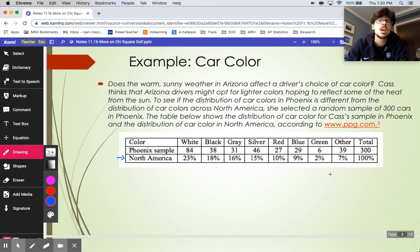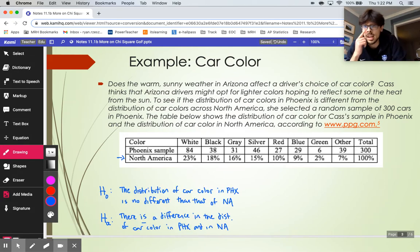So it's four-step time. The first thing we would want to do is set up hypotheses on this problem. H0 is going to basically say the distribution of car color in North America is the same as in Phoenix. So there is no difference between Phoenix and the rest of North America. HA is going to say there is a difference in the distribution of car color between Phoenix and the rest of North America. Remember the word distribution - the distribution of car color is a really important word when establishing your hypotheses.